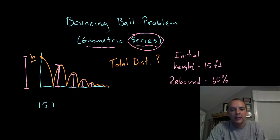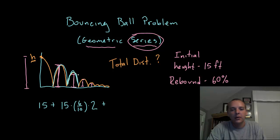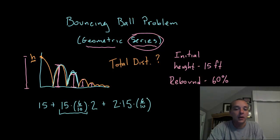For the second height, it will be sixty percent of fifteen, so fifteen times six-tenths. But after the first bounce it's a little different than the initial drop because we go up and down, so I need to double this distance. I actually have this distance to reverse twice. Then after the second bounce, the height will be sixty percent of that, so two times fifteen times six-tenths times another six-tenths — I'll write that as six-tenths squared.